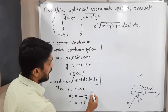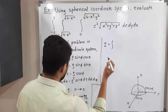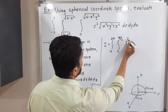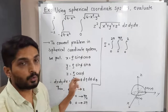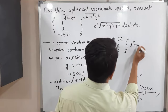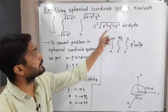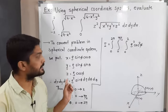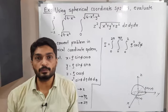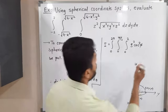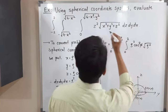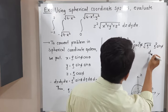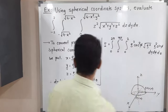So I equals the outer integration with respect to θ, middle with respect to φ, and inner integration with respect to ρ. We have Z squared, and since Z equals ρ cos φ, that becomes ρ² cos² φ. For X² + Y² + Z², substituting the spherical coordinate values gives ρ², so the square root of X² + Y² + Z² equals ρ. Then dz dy dx equals ρ² sin φ dρ dφ dθ.